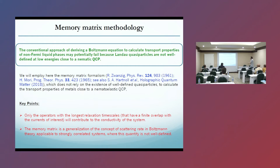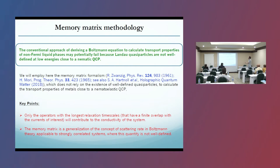A very important point: we are going to use the so-called memory matrix methodology. The conventional approach of deriving the Boltzmann equation may potentially fail because the Landau quasi-particles are not well-defined at low energies close to the nematic quantum critical point. So we employ this memory matrix formalism, which does not rely on the existence of well-defined quasi-particles.